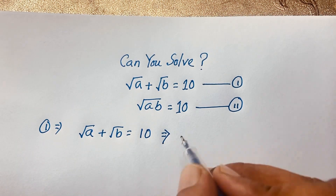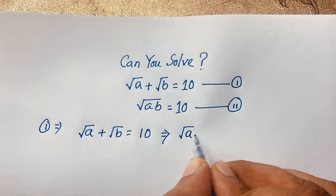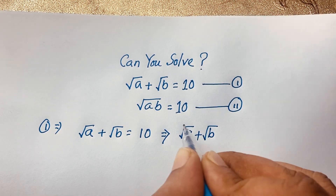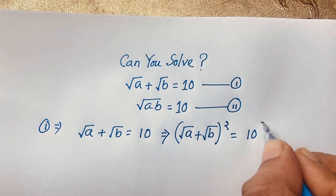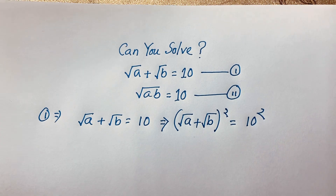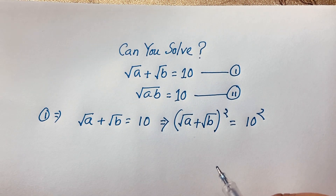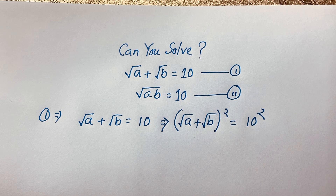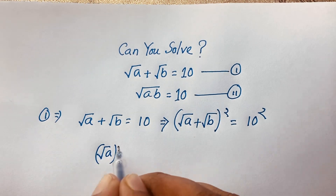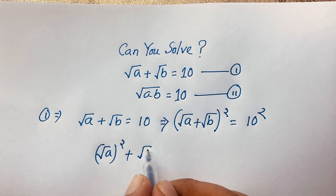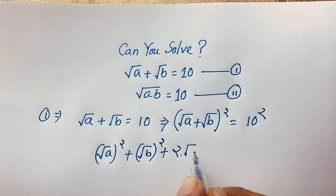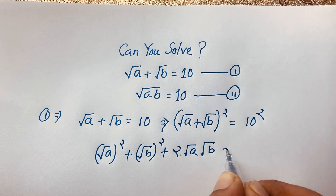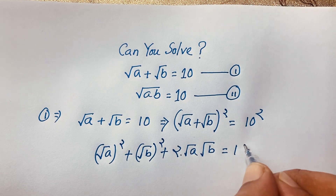Now I use both sides whole square. So (√a + √b)² is equal to 10². Using the formula (x + y)² = x² + 2xy + y², this expression becomes (√a)² plus (√b)² plus 2√a·√b, and 10² equals 100.